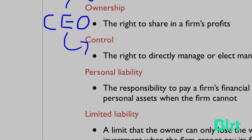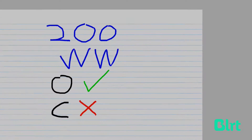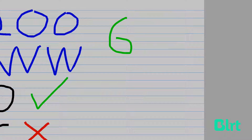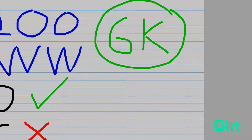Now let's look at the distinction between personal liability and limited liability. Going back to our Woolworths example — say I purchased $6,000 worth of shares, 200 shares for $6,000. If Woolworths' share price continued to drop and Woolworths declared bankruptcy, I would have limited liability, meaning the only amount I would lose is the $6,000 I invested. I wouldn't have to give up my own money or assets beyond that — I would only lose the $6,000 I invested.